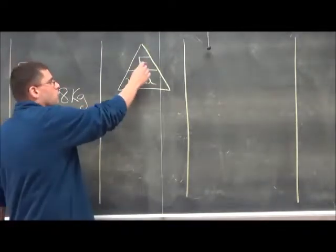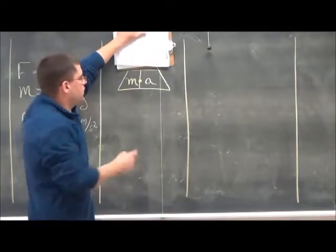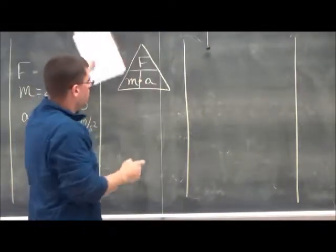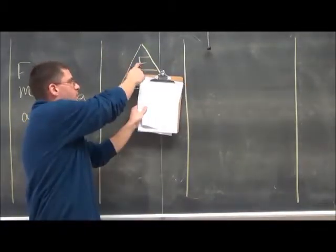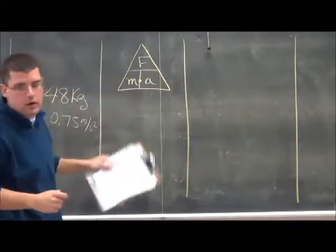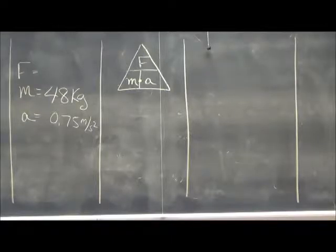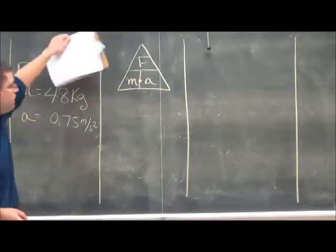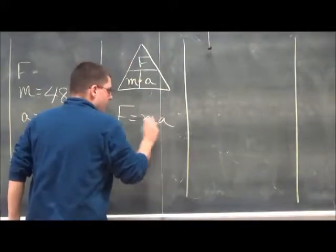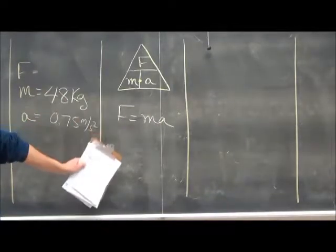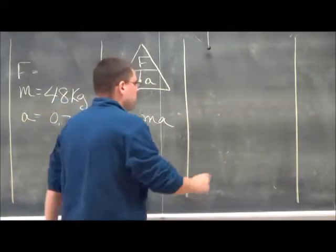Here's our formula triangle. If you don't know force, you cover it up, you're left with mass times acceleration. If you don't know mass, you cover it up, you're left with force over acceleration. If you don't know acceleration, you cover it up, you're left with F over M. Draw that formula triangle down on your paper. Make sure you have that copy up top there. We're solving for force. We don't know what it is, so it's M times A. F equals MA, or M times A.